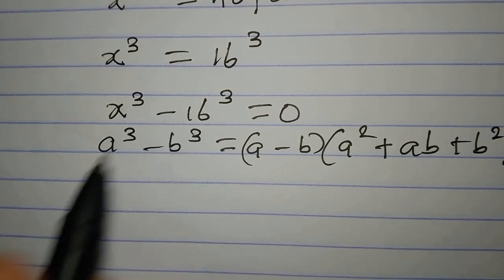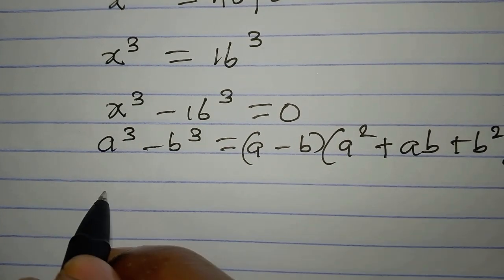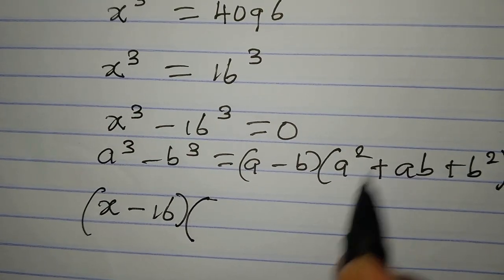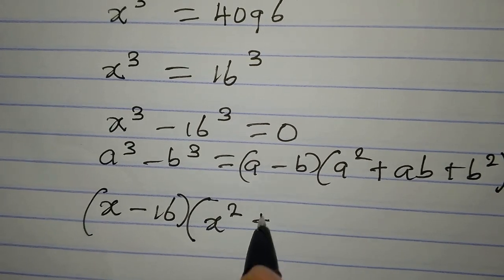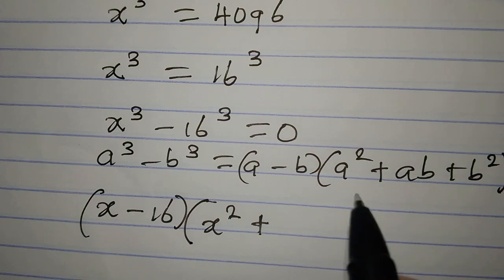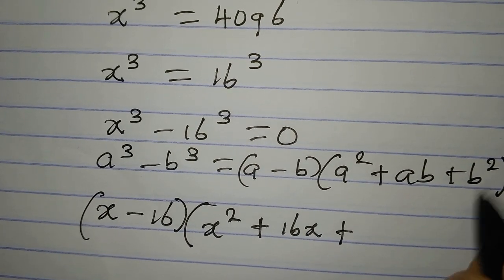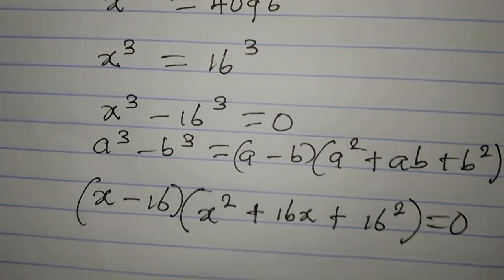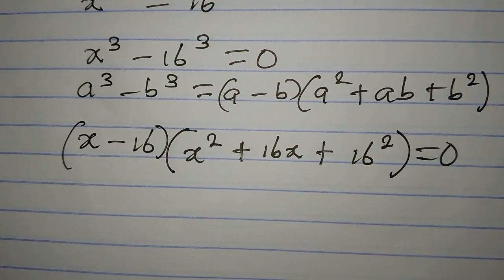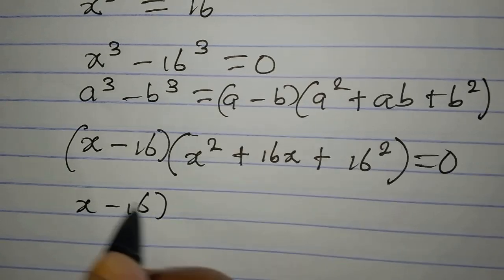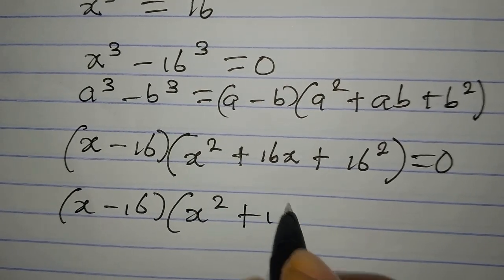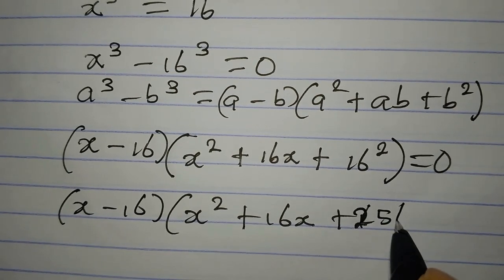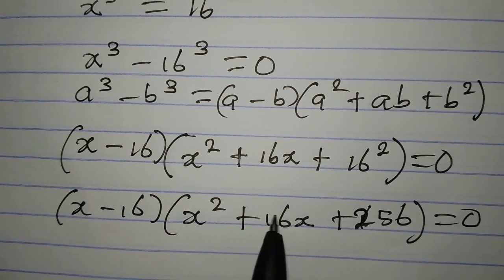Applying that factorization here: a minus b becomes x minus 16, then a squared becomes x squared, plus ab becomes x times 16, which is 16x, plus b squared becomes 16 squared, which is 256. The whole expression equals zero.